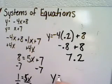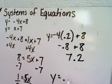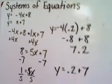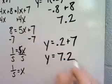Let's see what we get with the second equation. This is y equals 0.2 plus 7, and we do get the same answer of y equals 7.2.